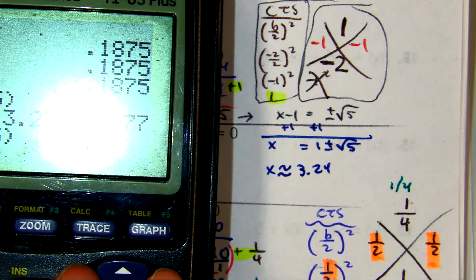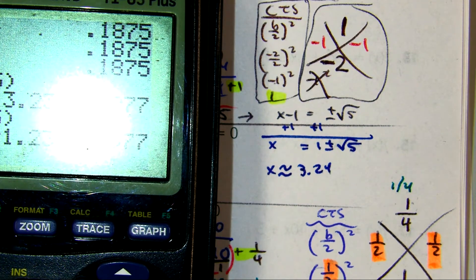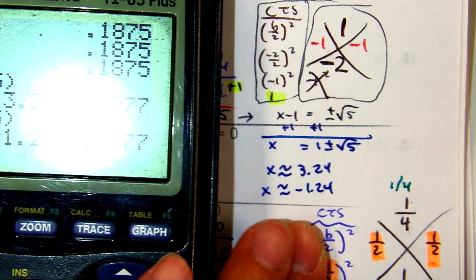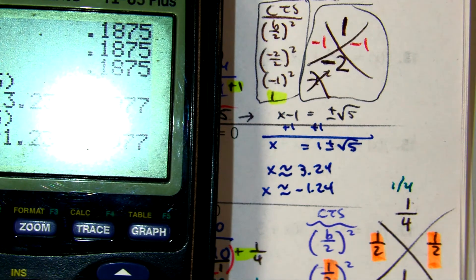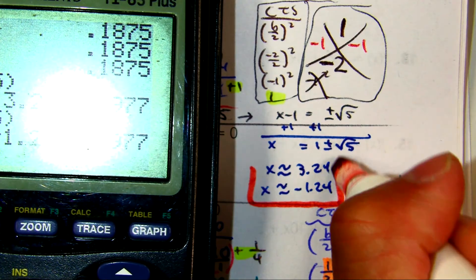And 1 minus radical 5, negative 1.24. Raise your hand if you got those as your answers. Take your time.